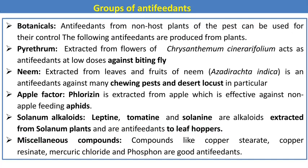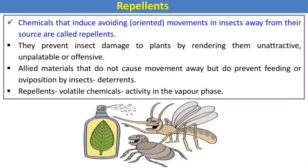Some botanical antifeedants include pyrethrum, neem, apple factor, and solanine alkaloids, along with various miscellaneous compounds. These are all antifeedants that can be used against different insect pest populations.